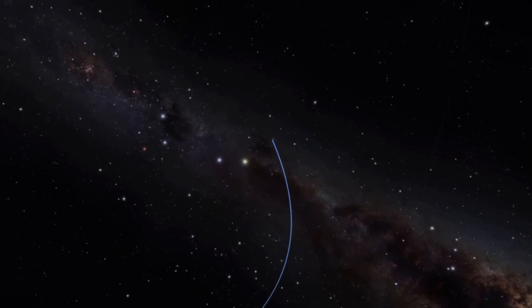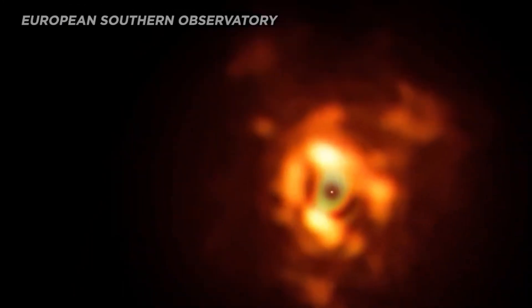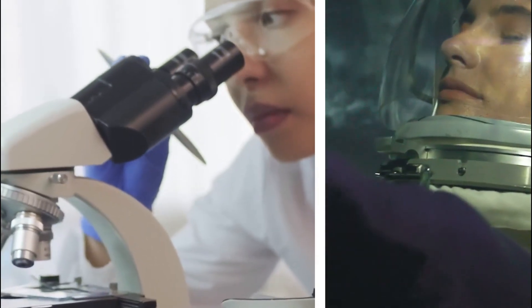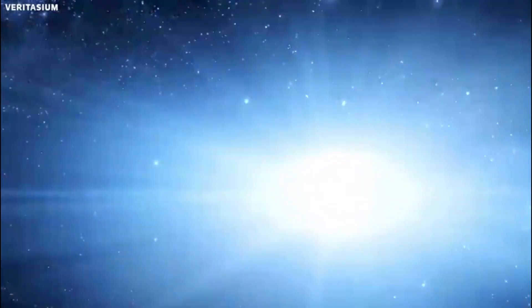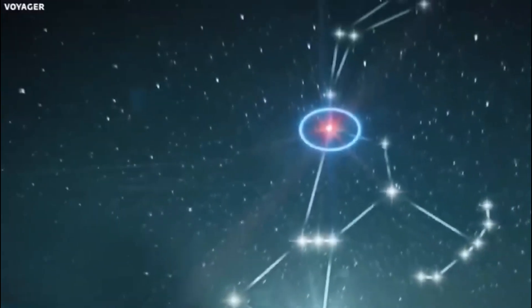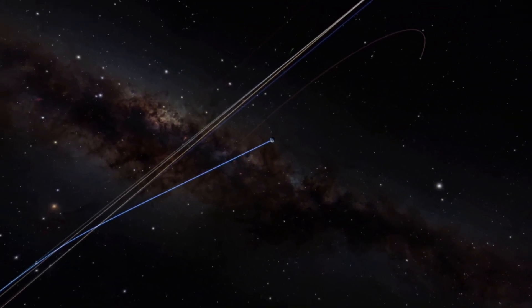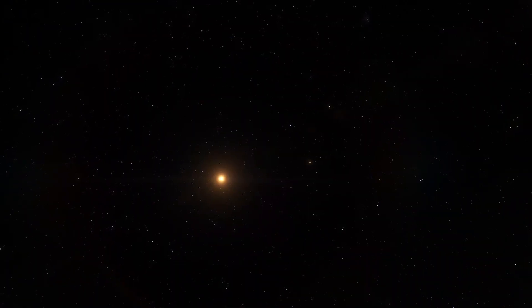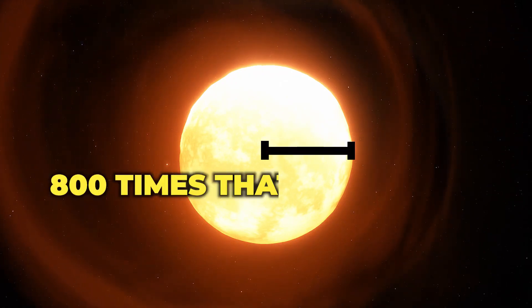Now, I know you might be thinking, what if Betelgeuse's supernova has already happened and we just haven't seen it yet? After all, it takes the light from Betelgeuse 650 years to reach us. Well, here's where the cosmic timeline comes into play. When we look at Betelgeuse, we're essentially looking into its past, seeing the light that left the star 650 years ago. So if it exploded 649 years ago, we would have seen it.